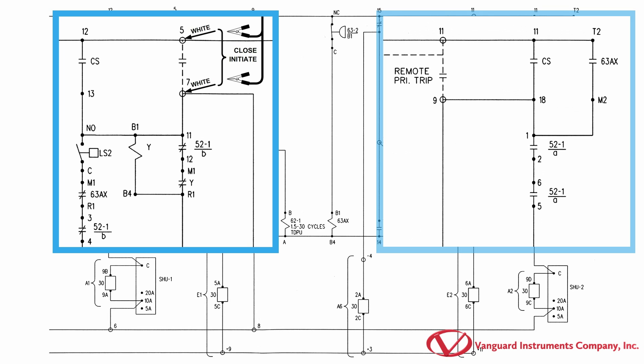On the trip circuit, the initiate circuit will connect the positive DC supply to terminal 9 of the trip circuit.